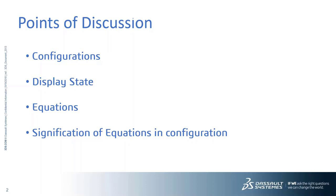What do we mean by configurations? Configurations allow you to create multiple variations of a part or assembly model within a single document. It provides a convenient way to develop and manage families of models with different dimensions, components, or other parameters. To create a configuration, you can specify a name and properties, and we can also modify the model to create the design variations you want.